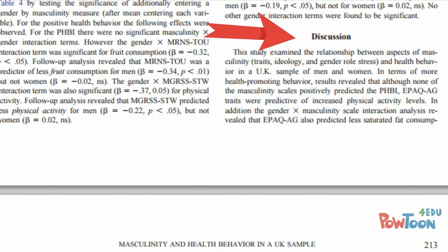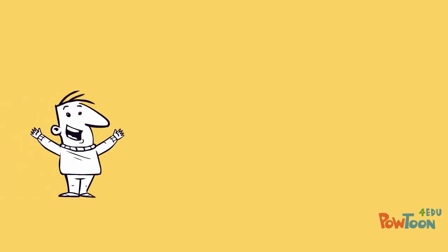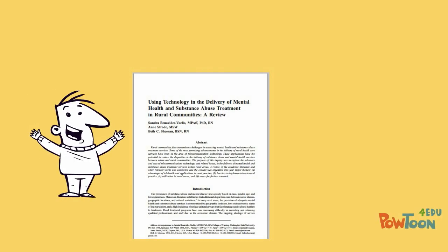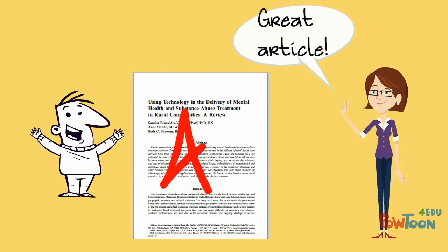Knowing about the different kinds of articles in scholarly journals made it easier for Jacob to find the specific kinds of articles that he needed.